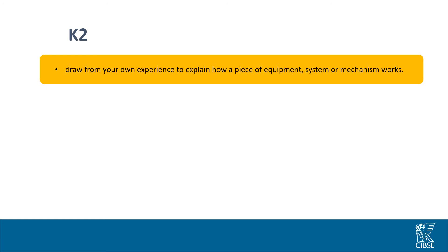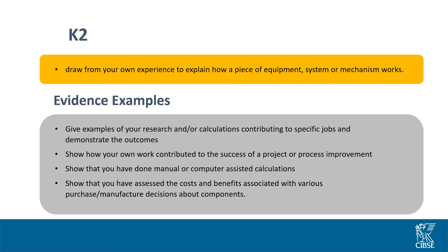Now let's look at K2, which asks you to demonstrate knowledge of the appropriate scientific, technical or engineering principles. Drawing from your own direct experience, think about how you might have worked on a particular piece of equipment, system or mechanism. Other evidence examples you might want to include: giving examples of your research or how you contributed to specific jobs, showing how your own work contributed towards a positive outcome or improved the process, or showing that you've done manual or computer-assisted calculations, or been involved in costing or manufacturing decisions about components.